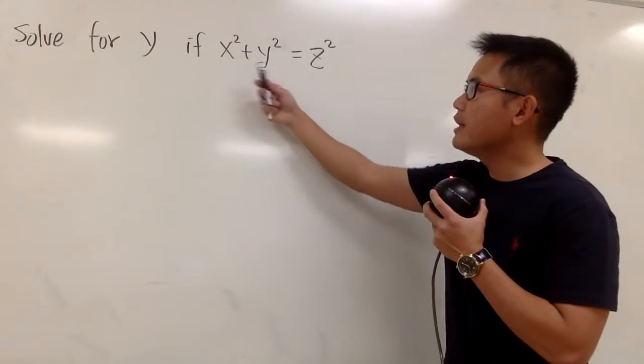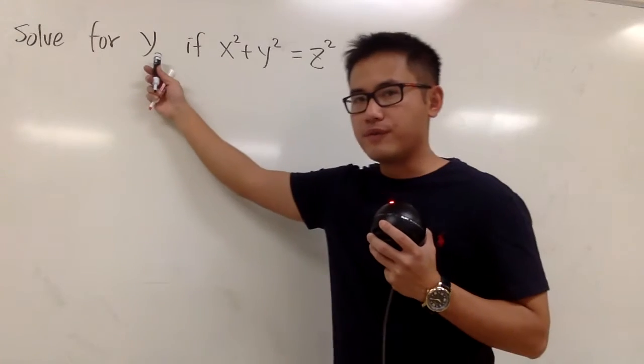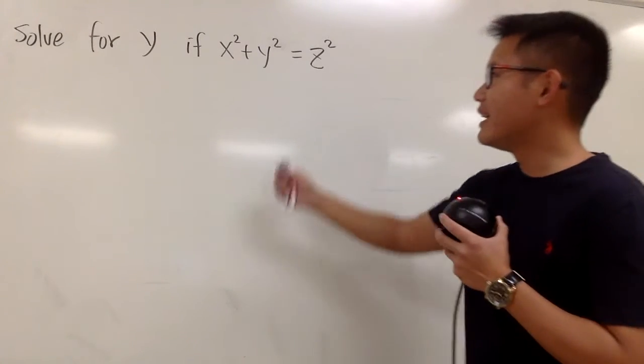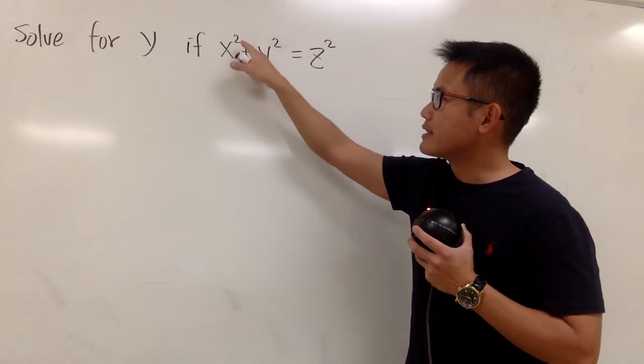Okay, we are given this equation, x squared plus y squared is equal to z squared, and we are going to solve for y. That means we have to get the y by itself. And notice that the y is right here, so we have to get rid of the x squared.